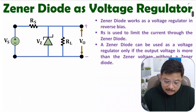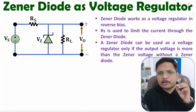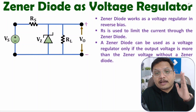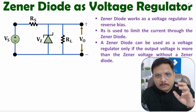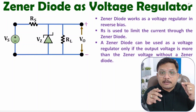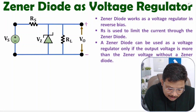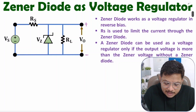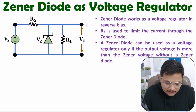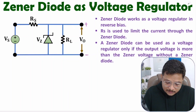First of all, you need to understand what a voltage regulator is. Voltage regulator means you will have constant output voltage. Input voltage may vary, but output voltage will remain constant. With the use of Zener diode, we will be keeping output voltage constant — using Zener diode as a voltage regulator.